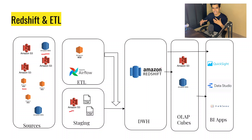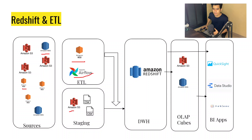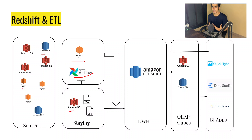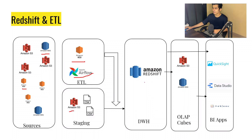Then we have the ETL machine, which can literally be anything — an EC2 instance, Apache Airflow, tools like Informatica, Talend, or even simple Python code. It's just a machine that sits between the source and the destination and transforms our data according to some logic.